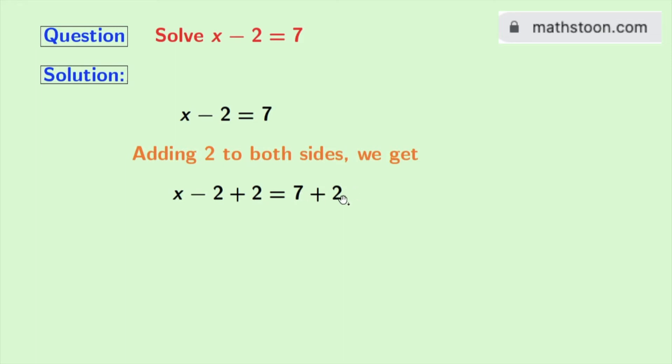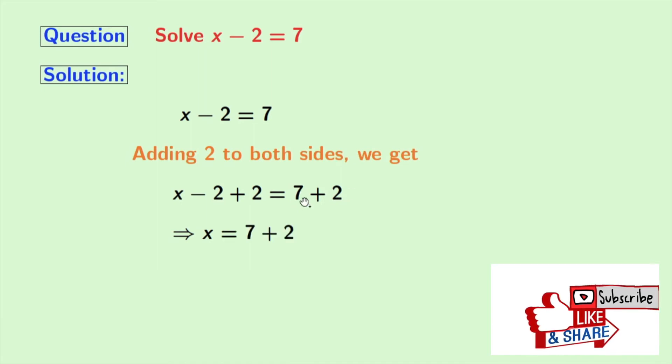As minus 2 plus 2 is equal to 0, solving the left hand side we get x. On the right hand side, 7 plus 2 is equal to 9, so we get finally x is equal to 9.